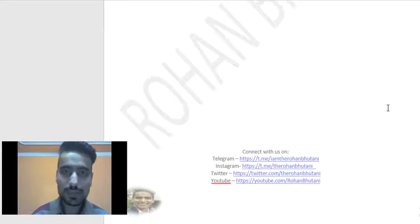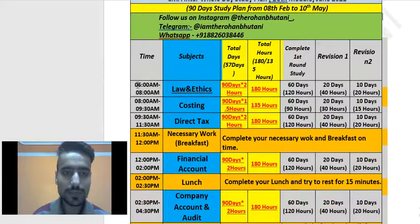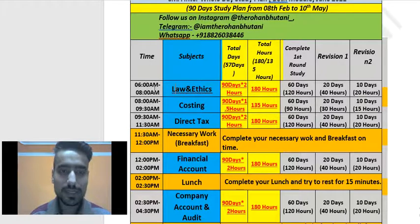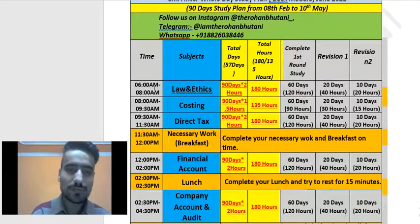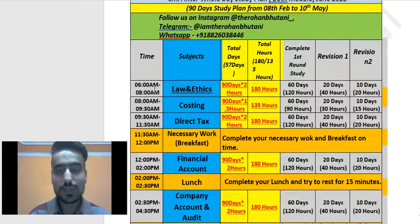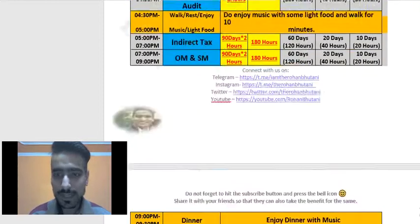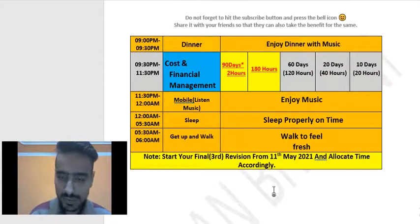Also give one hour daily to MCQs. You can spare this time within your existing slots — for example, if you are studying Laws and Ethics from 6 AM to 8 AM, study the theory from 6 to 7:30 AM and do MCQs of Laws and Ethics from 7:30 to 8 AM. In this way, spare 30 minutes for each subject. Since there are eight papers, that works out to 8 times 30 minutes, which is 240 minutes — roughly three and a half hours — and this can be covered within the existing schedule.